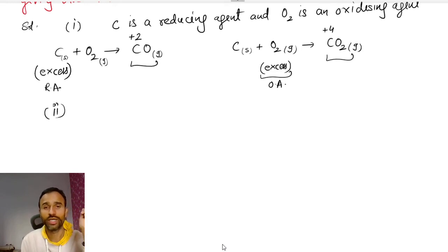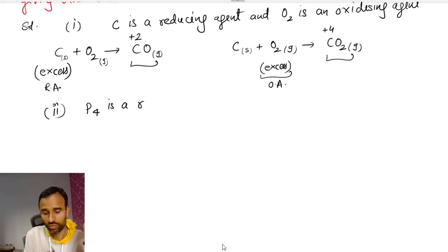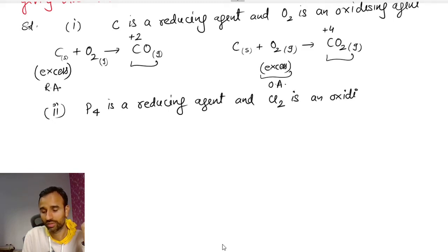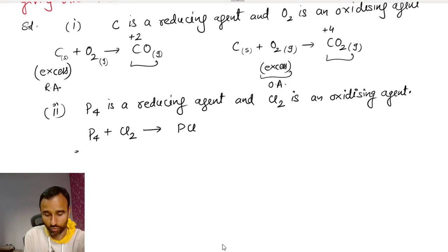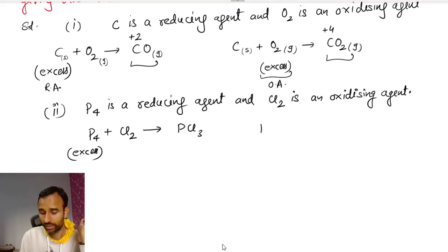Second, let us take P₄ and Cl₂. P₄ is a reducing agent and Cl₂ is an oxidizing agent. If P₄ reacts with Cl₂, we get either PCl₃ or PCl₅. If P₄ is in excess — meaning the reducing agent is in excess — we get PCl₃. If Cl₂ is in excess, we get PCl₅.